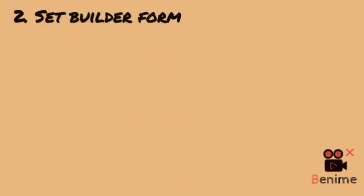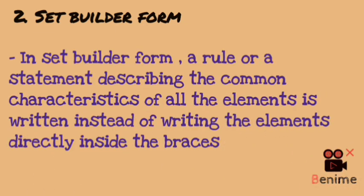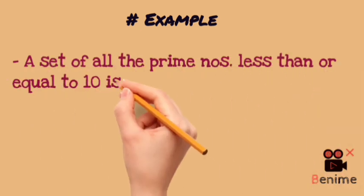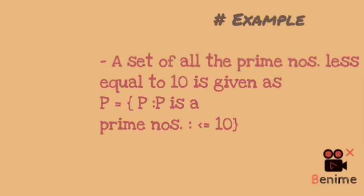The second form is Set Builder Form. In Set Builder Form, we simply write the common characteristics of the elements directly in braces. For example, suppose I have the set of all prime numbers less than or equal to 10. We represent it as: P = {p | p is a prime number and p ≤ 10}. We write the property or rule in sentence form inside curly braces — this is called Set Builder Form.